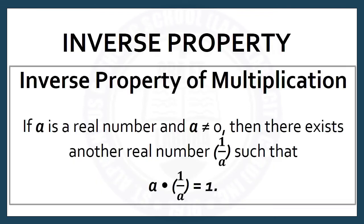Inverse Property of Multiplication: It states that if A is a real number and A is not equal to 0, then there exists another real number, 1 over A, such that A times 1 over A is equal to 1.